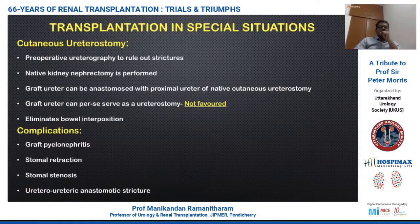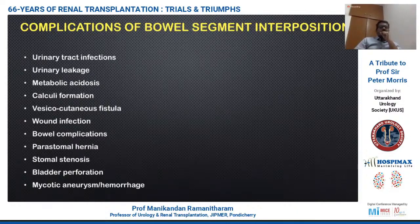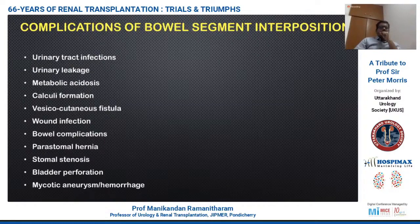Complications of cutaneous ureterostomy include graft pyelonephritis, stoma retraction, stenosis, and ureteroenteric fistula. Complications of bowel segment augmentation include recurrent pyelonephritis of the graft — with very high incidence requiring long-term antibiotics — urinary leakage, metabolic acidosis particularly with small bowel segments, calculus formation, vesico-cutaneous fistula, bowel complications, parastomal hernia, stomal stenosis, perforation of the bladder with increased pressure, and mycotic aneurysm with hemorrhage.